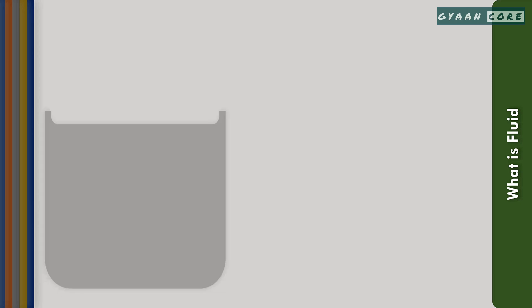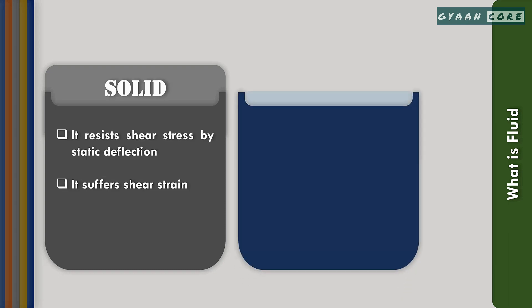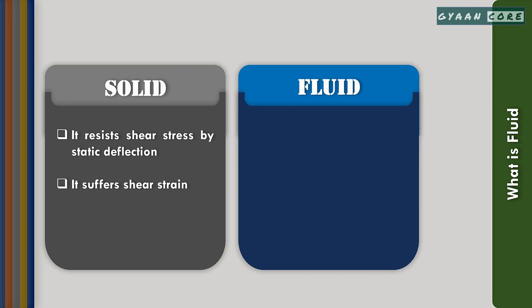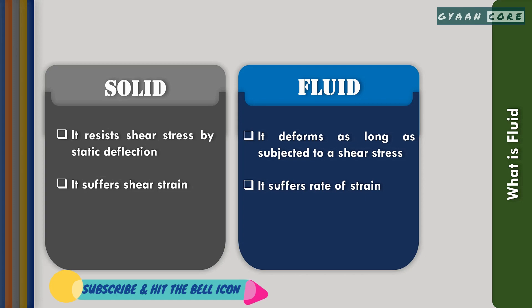Any matter can exist in only two states: one is solid and another is fluid. The difference between the two is quite obvious, but if we put it into words, a solid can resist a shear stress via static deflection, but a fluid cannot. Any shear stress applied to a fluid will result in motion of that fluid, irrespective of the magnitude of that shear stress. Fluid deforms and moves continuously as long as the shear stress is applied. Hence, fluid at rest means it is in a state of zero shear stress.